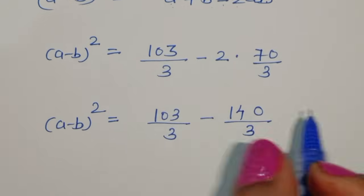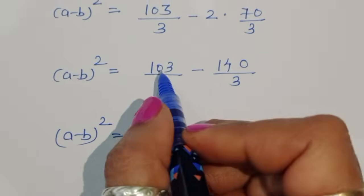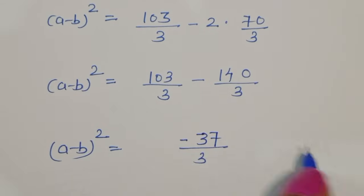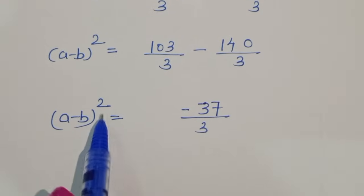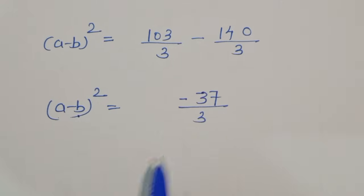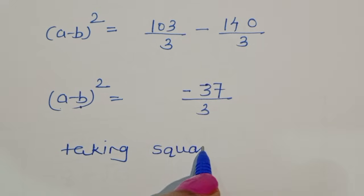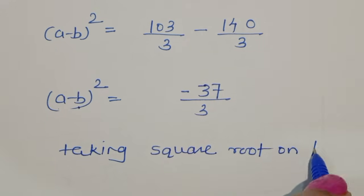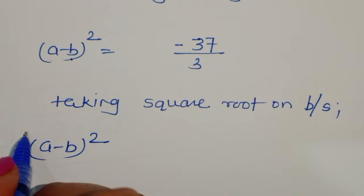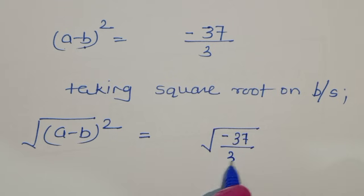So a minus b whole square equals 103 minus 140 over 3, which equals minus 37 over 3. This is the value of a minus b whole square. To find a minus b, we take the square root of both sides, giving square root of minus 37 divided by 3.